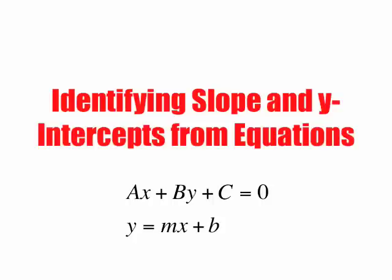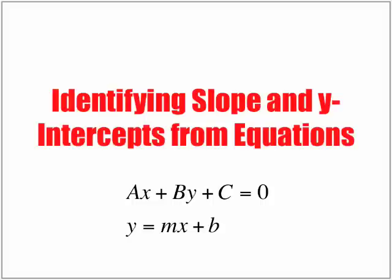Identifying slope and y-intercepts from equations. We've looked at standard form here, the equation ax plus by plus c equals zero. The format in which we want our equations to be is in the form of y is equal to mx plus b, where the value of m represents the slope and the value of b represents our y-intercept.